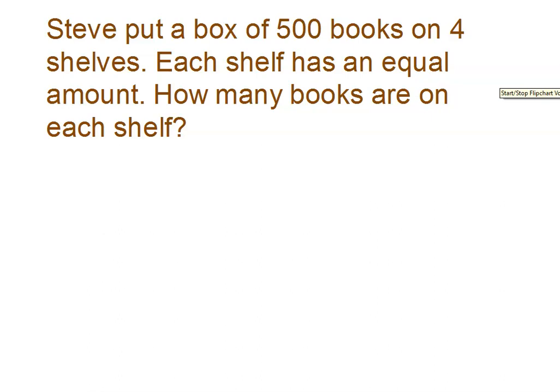Here are some clue words to help me tell what's going on. I see the word each. I see the word equal. Both of those let me know I'm going to be dividing. So I'm taking the 500 and putting them on four shelves. So I'm really going to be doing 500 divided by four.